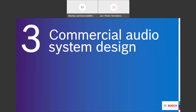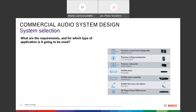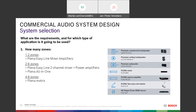Now let's look at how to design a commercial audio system. First, what are the requirements and for which application will it be used? Start with the first question: how many zones are required? For one to two zones, use a Planar Easy Line mixer amplifier. For two to six zones, you need at least a two-channel Planar Easy Line mixer with power amplifiers, or the Planar All-in-One with six zones. For four to eight zones, you need the Planar Matrix.